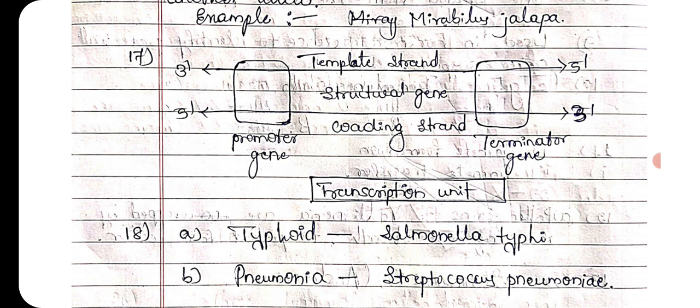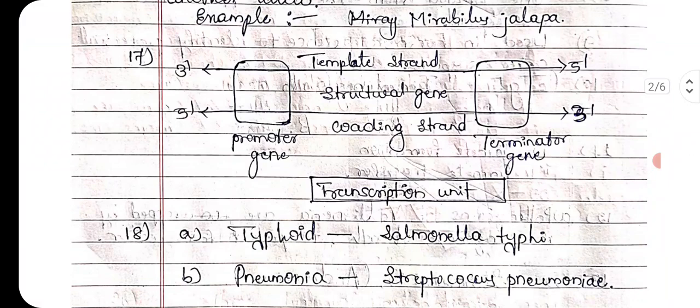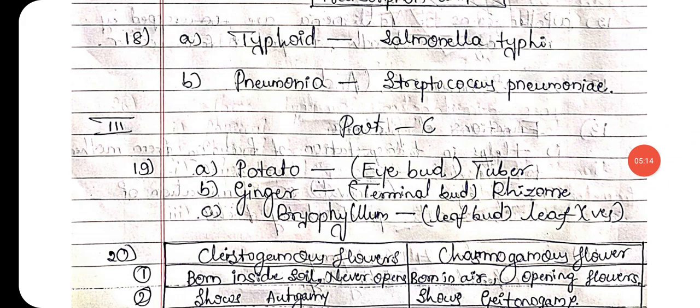Seventeenth one: draw a neat labeled diagram of a transcription unit. It has a 3' strand and a 5' strand. One strand is the template strand and the other is the coding strand. There is a promoter region and a terminator region. The whole unit including the structural gene is known as the transcription unit.